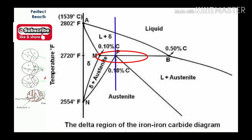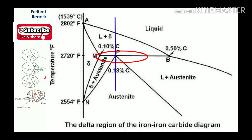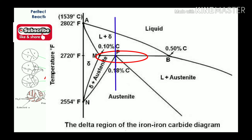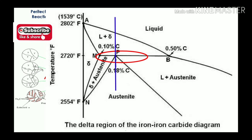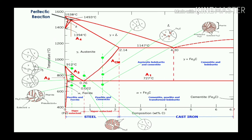At a temperature of 1493 degrees centigrade and composition of 0.18 percentage of carbon, liquid plus delta phase converts into gamma austenite phase by the cooling process. If heating is applied, gamma austenite converts back into liquid plus delta. So the peritectic reaction occurs at 1493 degrees centigrade, which is a higher temperature. Gamma austenite is the solid phase of carbon in iron at higher temperatures.